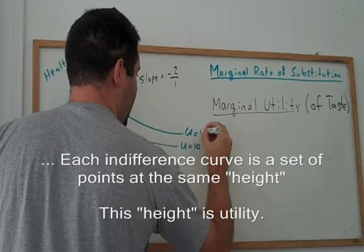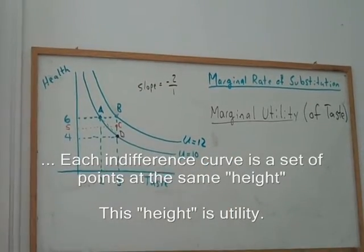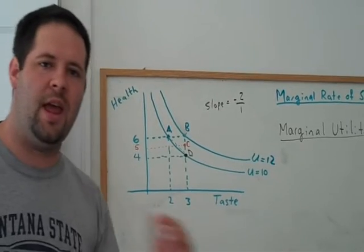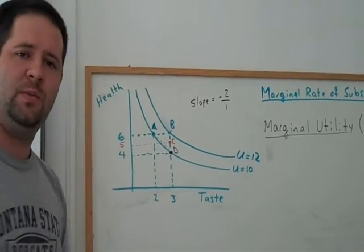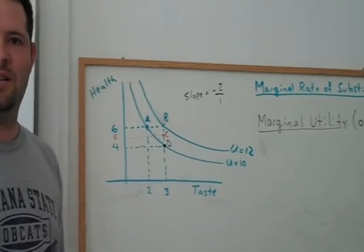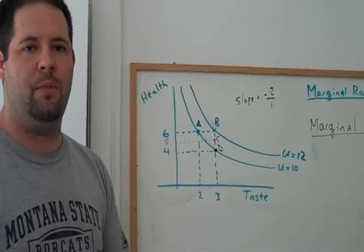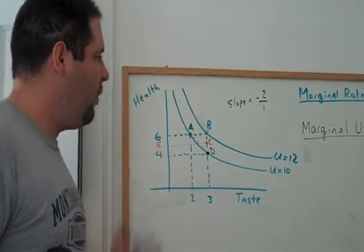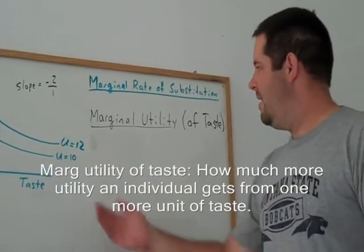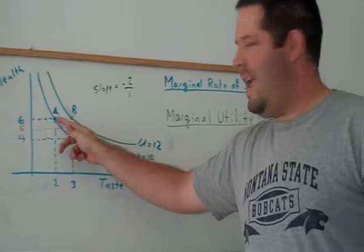So, if we think about that, what we need to know is something about this indifference curve. Notice that I'm labeling how much utility there is on these indifference curves. Notice the difference between bundle A and bundle B. The only difference between those two bundles is that you have one more unit of taste at bundle B than you do at bundle A.